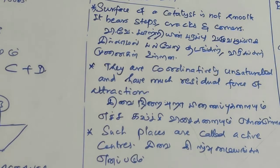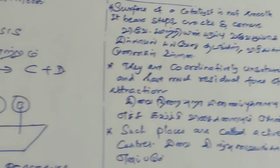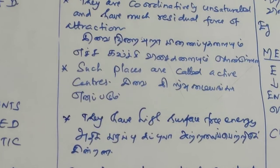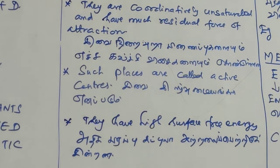There is a residual force of attraction at those irregular points. The reactant molecules adsorb there to satisfy that residual force. This is associated with some amount of energy, and that energy is used to activate the reactant molecules. That is the high surface free energy of the active centers.